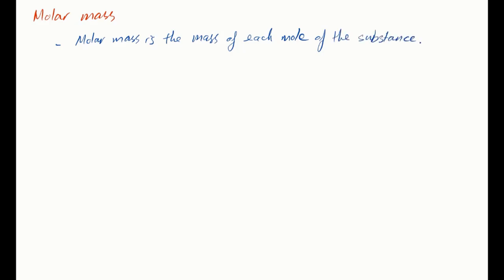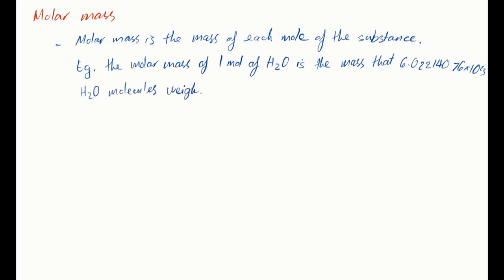So say you have one mole of water, then the molar mass of water is simply the mass that Na water molecules weigh. So the molar mass is about 18.01528 gram per mole. The unit for molar mass is grams per mole.